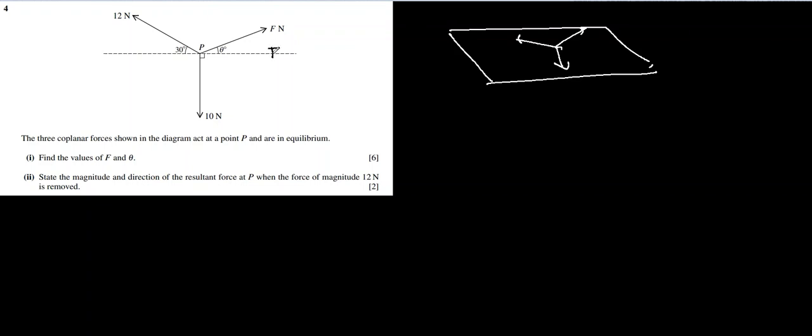This component of F will be F cos theta because the angle is this way. So in this direction, the component will be F sin theta. This is also a tilted force, so here it will be 12 cos theta and this will be 12 sin theta, 30 degrees. We know here it is 30 degrees.